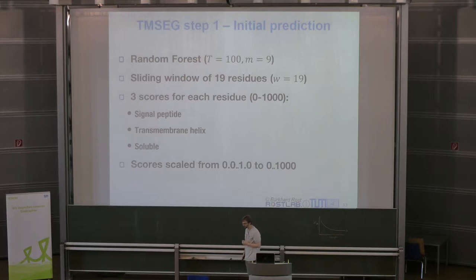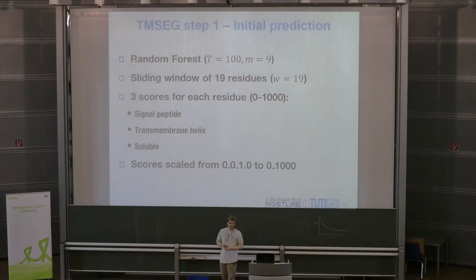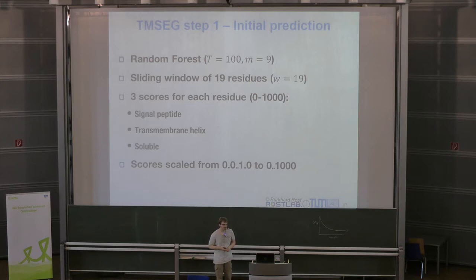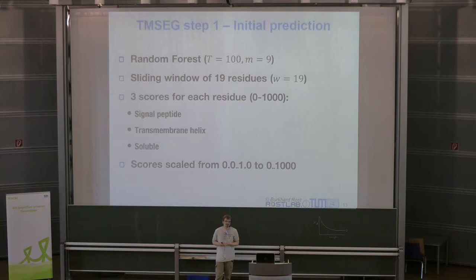TMSEC is divided into four separate steps. The first step uses a random forest — in my case 100 trees — where M is the number of randomly selected features at each classification split. In the end I get three classes: signal peptides, transmembrane helices, and soluble residues.